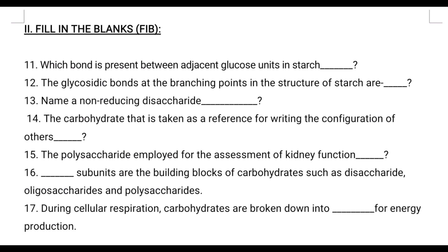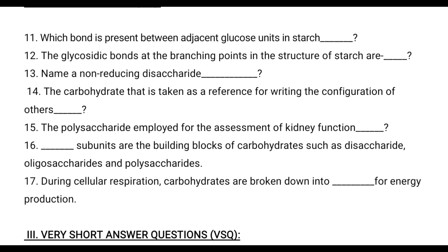Eleventh question: Which bond is present between adjacent glucose units in starch? The correct answer is alpha-1,4 glycosidic bond. Twelfth question: The glycosidic bonds at the branching points in starch — at the branch point, the bond present is alpha-1,6 glycosidic bond.